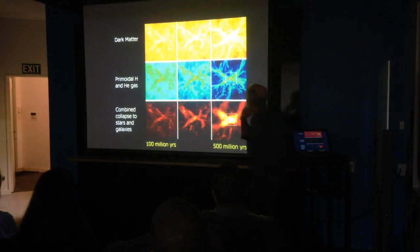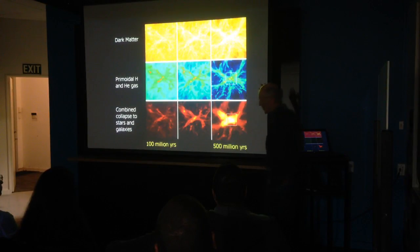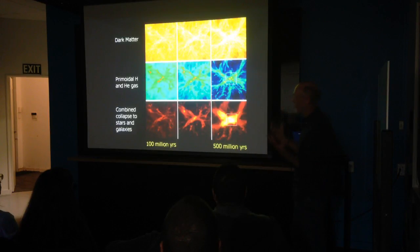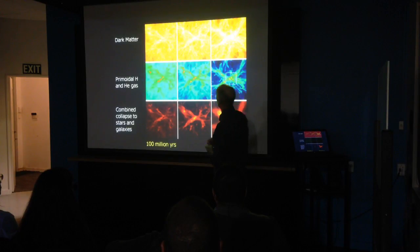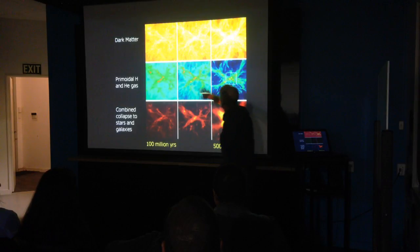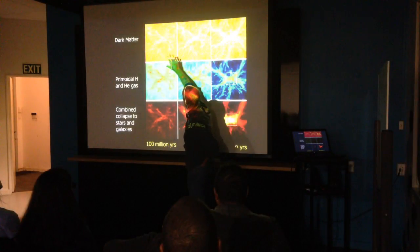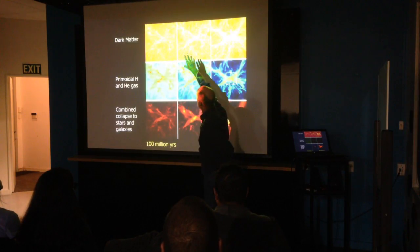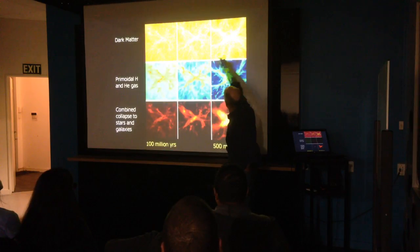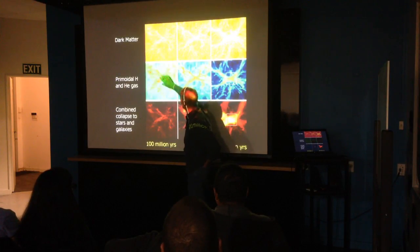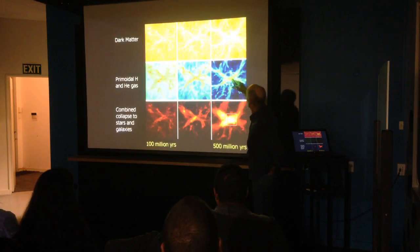Dark matter has been studied via computer simulations — you write down all the equations of gravity, feed them into computer models and run them for months on supercomputer arrays, computing trial universes. Dark matter only feels the gravitational force, but there's a lot of it, so as it slowly contracts it forms more and more condensed structures, carrying along the primordial hydrogen-helium gas — gradually squishing it into tighter and tighter bundles.